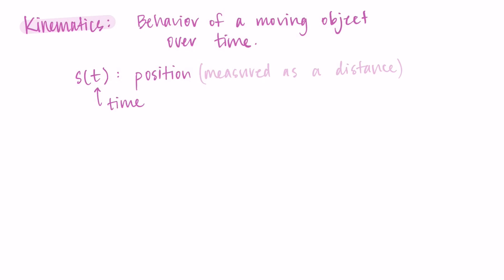Next we can take the derivative of the position, and this is actually the velocity. Let's think about why that's happening. If we're taking the derivative of s with respect to time, we're looking at the change in position over time.